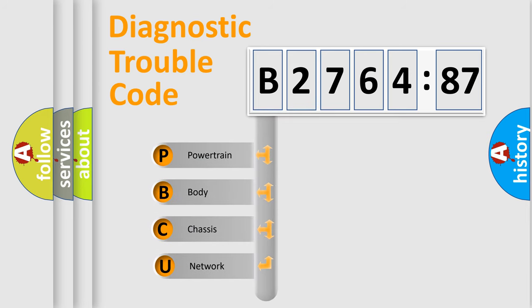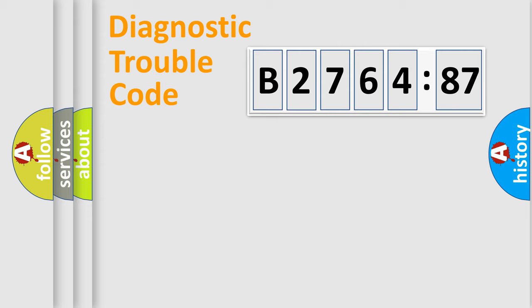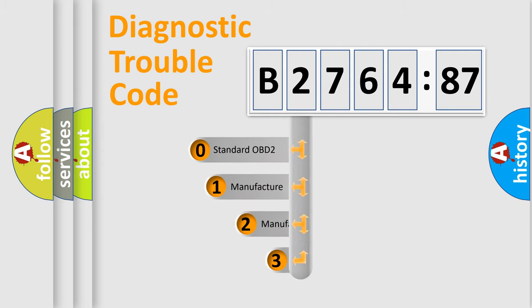First, let's look at the history of diagnostic fault code composition according to the OBD2 protocol, which is unified for all automakers since 2000. We divide the electric system of automobiles into four basic units: Powertrain, Body, Chassis, and Network.